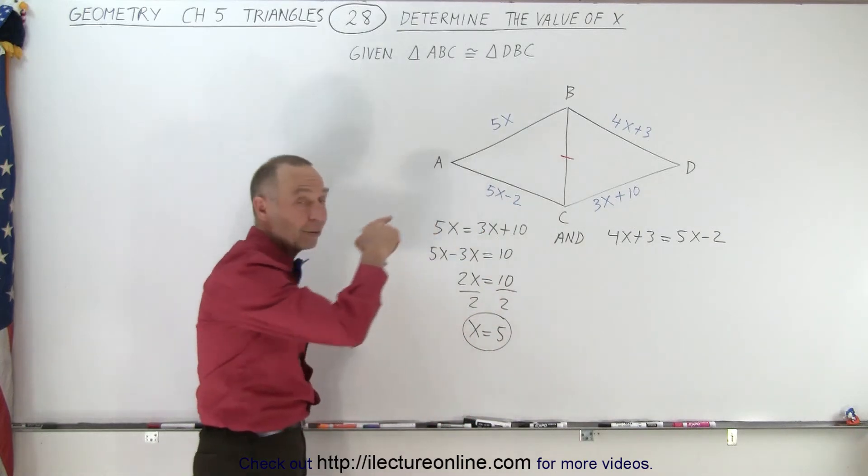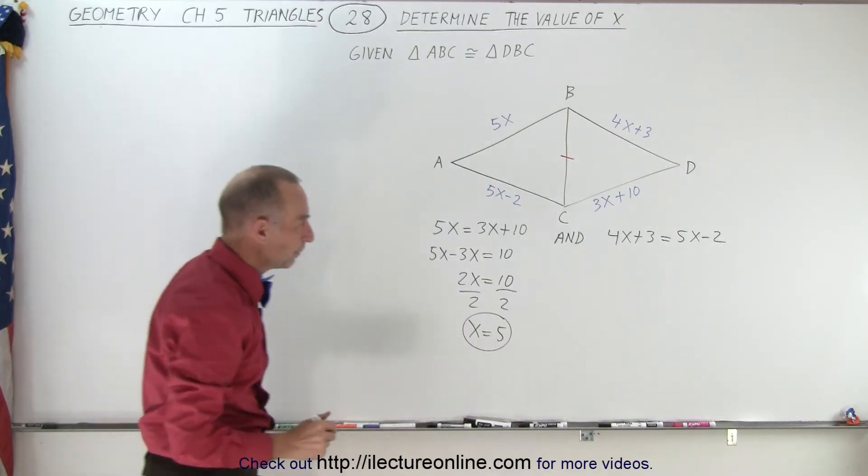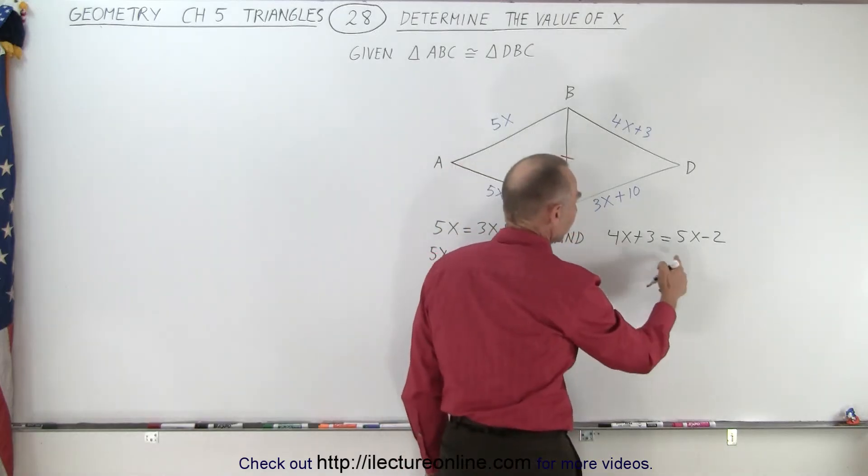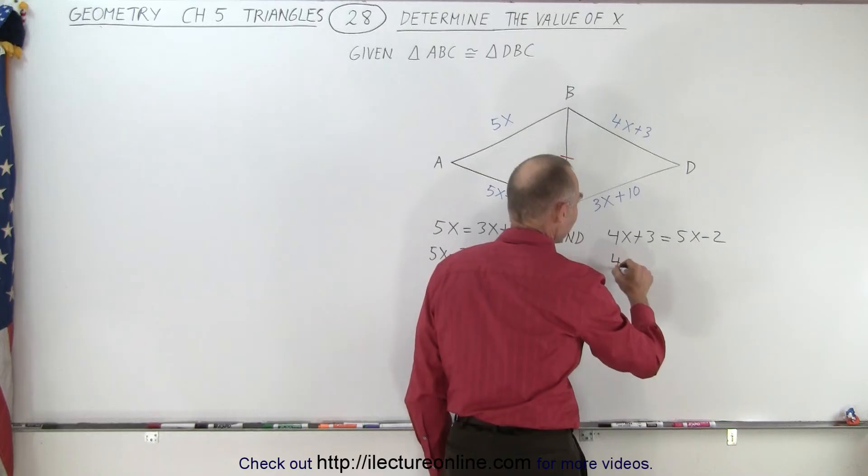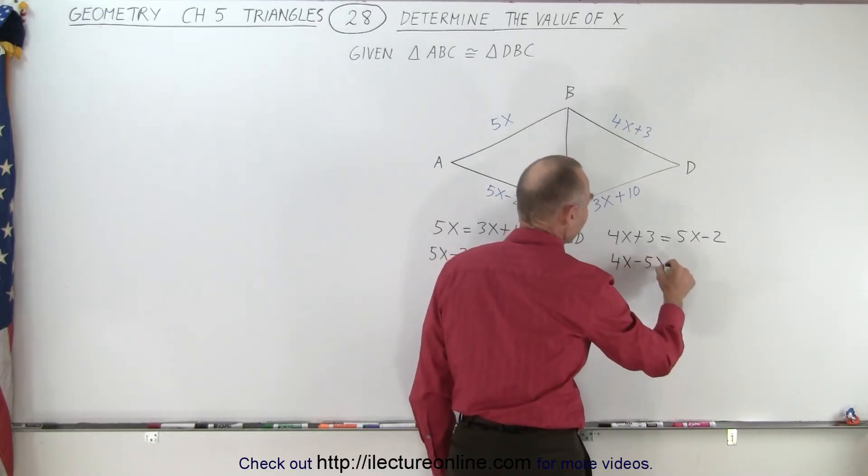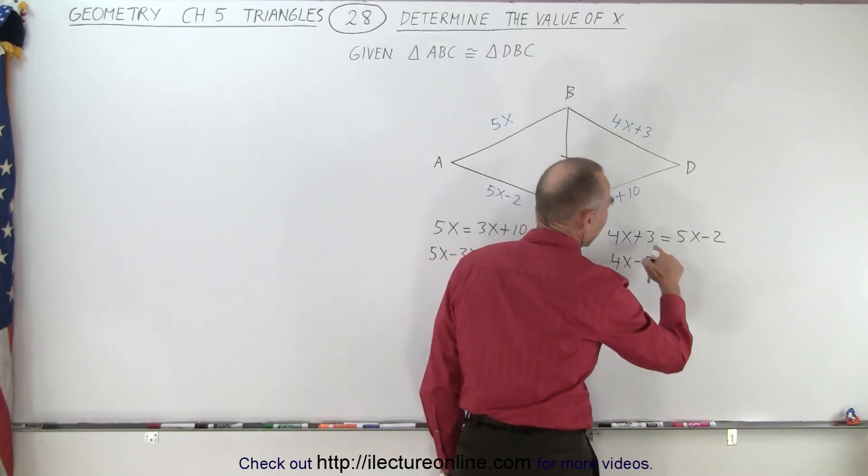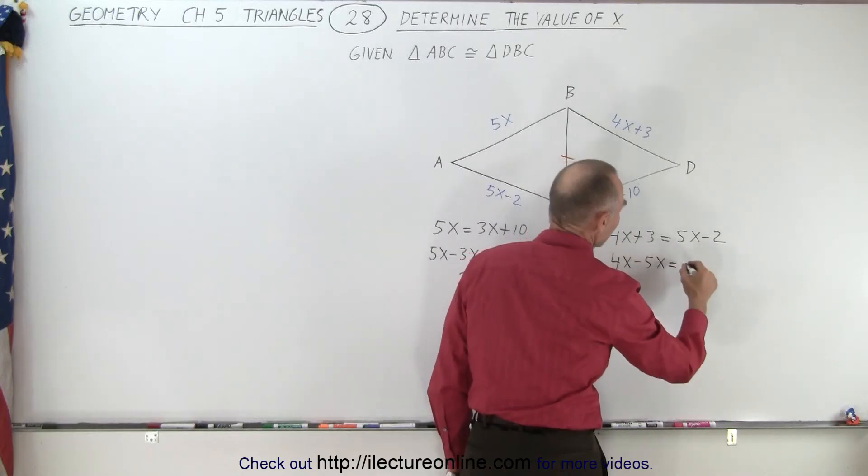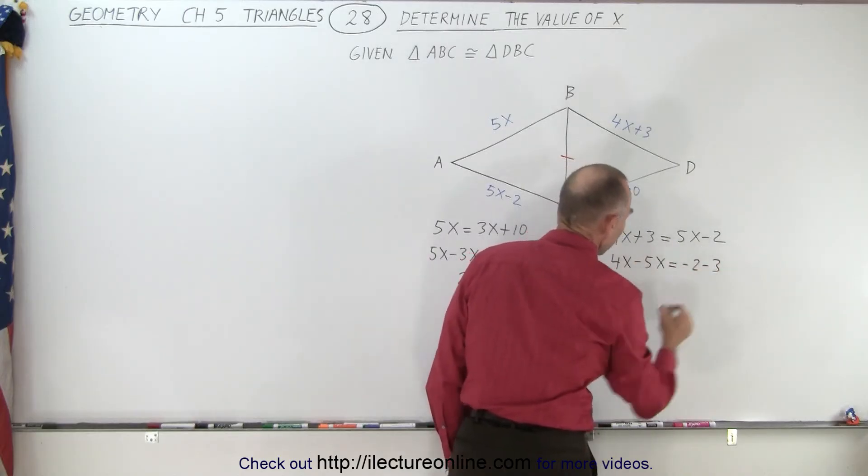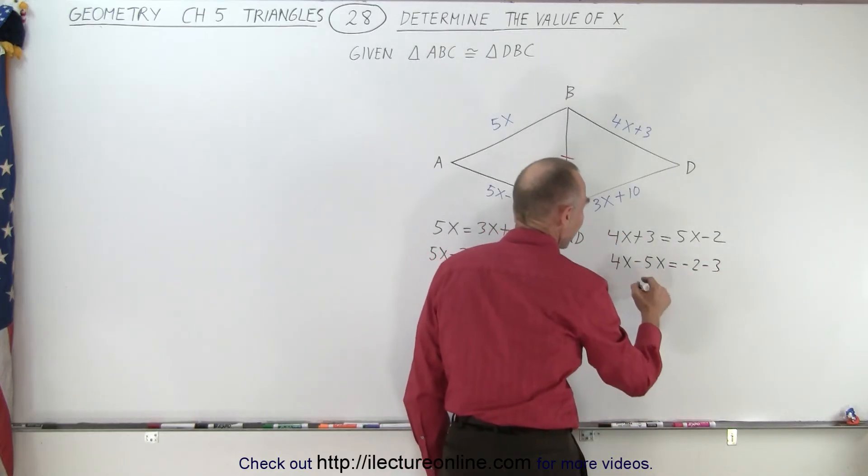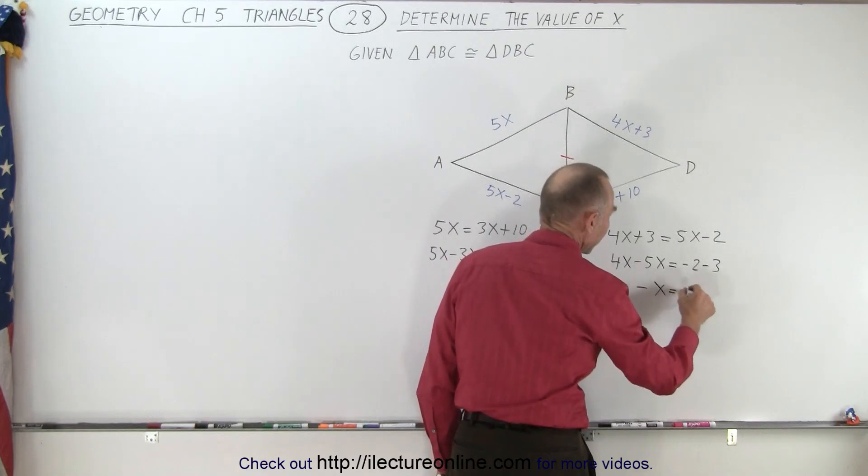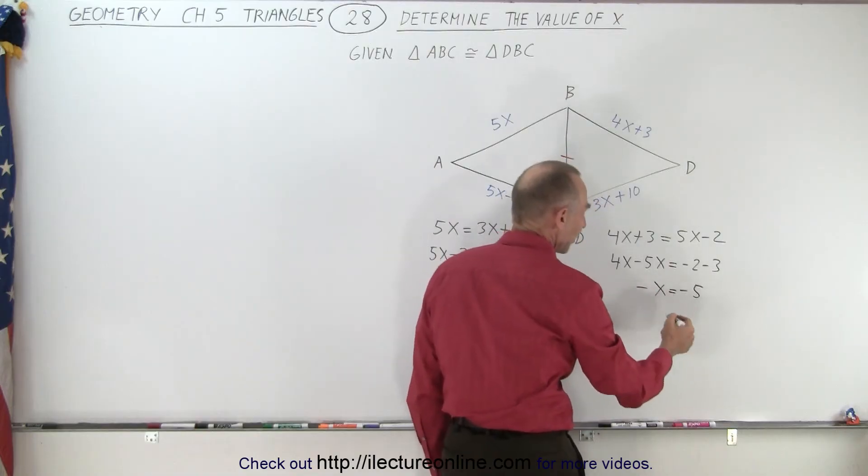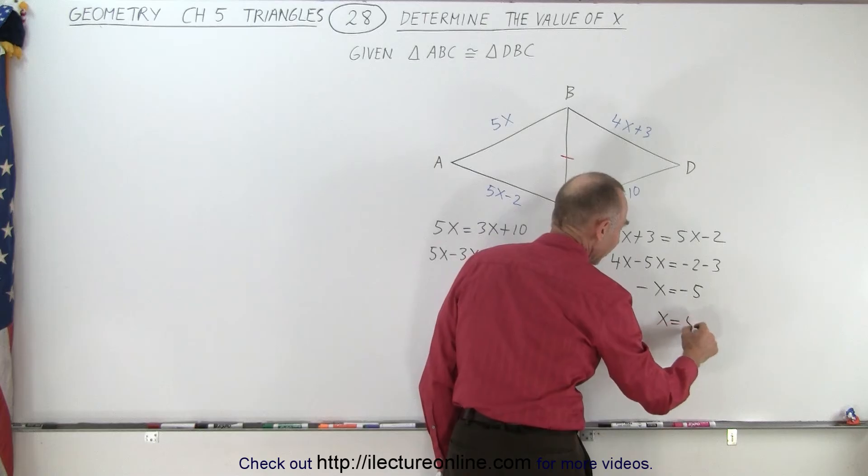So now we're expecting x to equal 5 on that one as well. So here we're going to subtract 5x from both sides. So we have 4x minus 5x is equal to, now we subtract 3 from both sides, we get minus 2 minus 3. So 4x minus 5x is minus x equals negative 5. Multiply both sides by negative 1. x equals 5.